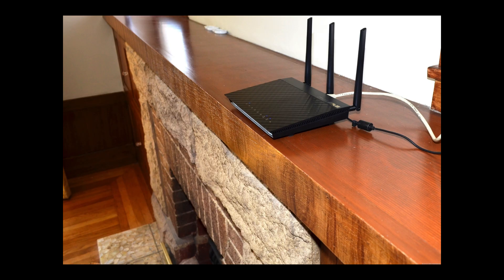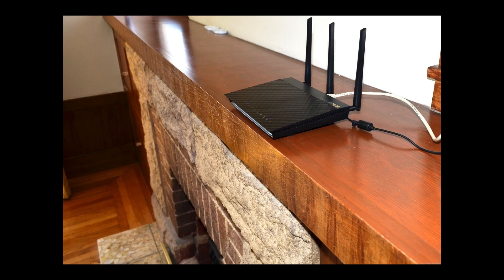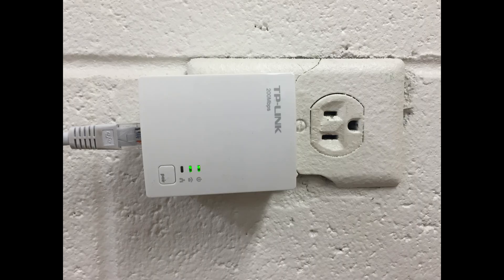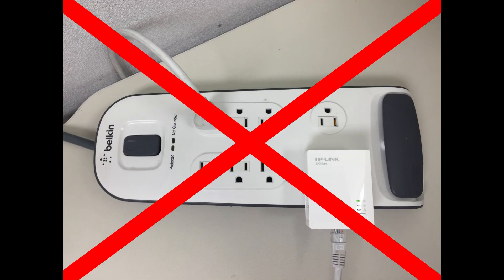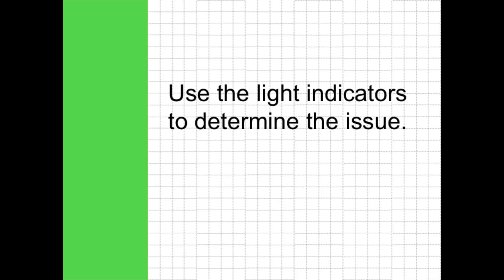To troubleshoot your system, you will first want to locate your internet router and ensure it is working. Now we will go over how to power cycle your wireless bridges. Follow the network cable connected from the router to bridge 1 and verify that bridge 1 is properly plugged into a wall outlet, not a surge protector or an outlet controlled by a switch. The bridges are small cubes and will function the same regardless of brand. Check the light sequence on bridge 1 to determine the issue.